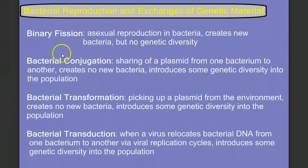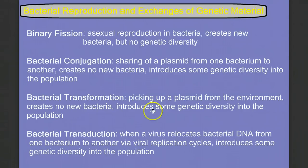So there we have it — these are the four processes you need to know about bacterial reproduction and exchange of genetic material to explain how bacterial populations can become genetically diverse. Go back over each of these, draw lots of pictures, and be able to explain each step along the way. Make sure you can differentiate between these four. If you have any questions, leave them in the comments below. Hope you learned something — see you next time.